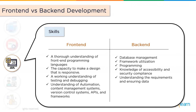Talking about the skills required for back end development — back end developers deal with back end languages and frameworks like Java, Ruby on Rails, etc. to make web pages and applications operate. It's vital to know commonly used back end languages and frameworks like Django, Node.js, Express.js and so on. Other important skills include database management, framework utilization, programming, knowledge of accessibility and security compliance, and understanding requirements and ensuring data consistency and integrity.